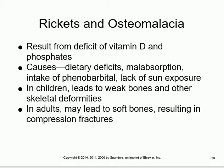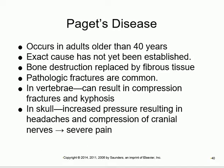Rickets and osteomalacia are both caused by vitamin D deficiency, causing weak bones that start to bend. The difference is that rickets occurs in children and is more severe, while osteomalacia occurs in adults. Same underlying problem, different age groups.